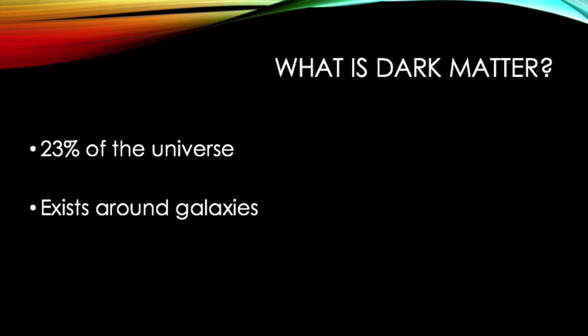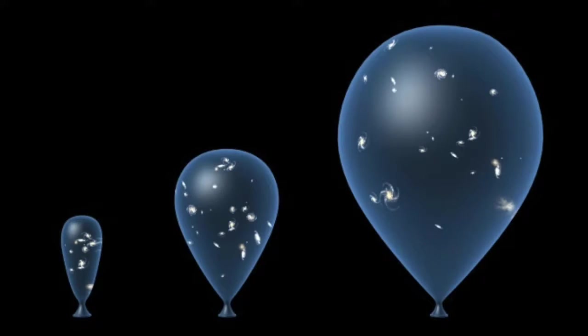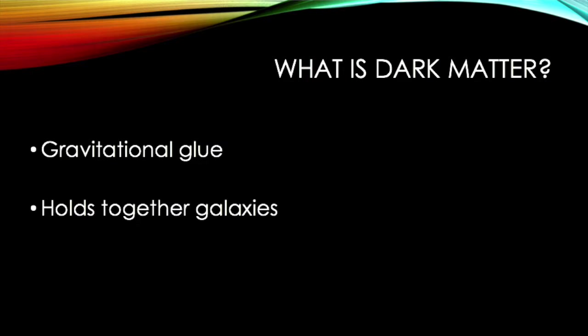Welcome to the world of particle astronomical physics. Dark matter makes up 23% of the universe and exists around galaxies. Without it, the universe would be extremely cold and separated. It can be defined as a gravitational glue that holds together galaxies and plays a vital role in the history and fate of the universe. However, there is more unknown about this phenomena than known, since the substance has not yet been directly observed.